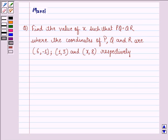Hi and welcome to the session. Let's work out the following question. The question says, find the value of x such that PQ is equal to QR where the coordinates of P, Q and R are (6,-1), (1,3) and (x,8) respectively.